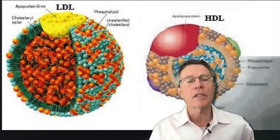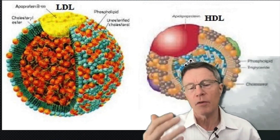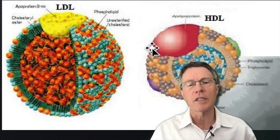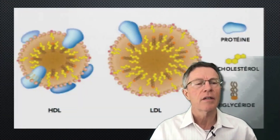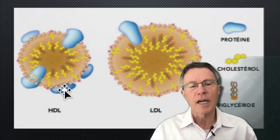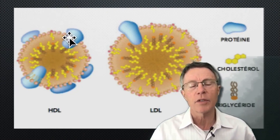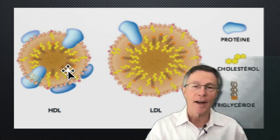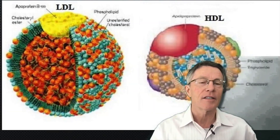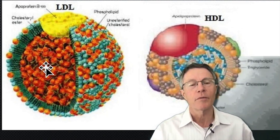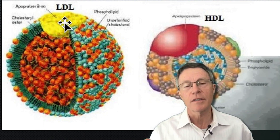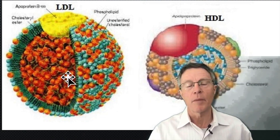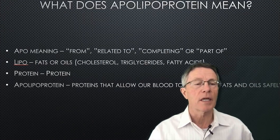The same principle applies to HDL. There are different proteins for the HDL and LDL components. HDL has its higher density for two reasons: it has less fat and a higher protein concentration. That's why HDL is measured as higher density. All of these populations are called lipo — meaning fat or oil — proteins, because they're packets made by the body's proteins to encapsulate microscopic amounts of fats and oils transferred through the blood.